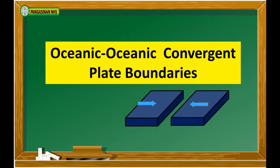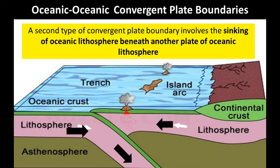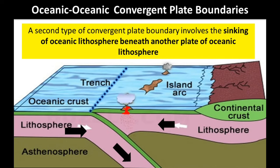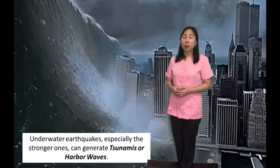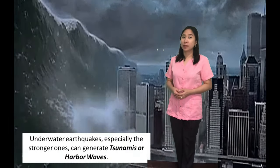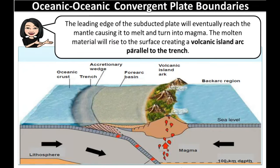Oceanic-oceanic convergent plate boundaries: a second type of convergent plate boundary involves the sinking of oceanic lithosphere beneath another plate of oceanic lithosphere. Converging oceanic plates will cause formation of trenches, and these trenches will become sources of earthquakes. Underwater earthquakes, especially the stronger ones, can generate tsunamis or harbor waves. The leading edge of the subducting plate will eventually reach the mantle, causing it to melt and turn into magma. The molten material will rise to the surface, creating a volcanic island arc parallel to the trench.